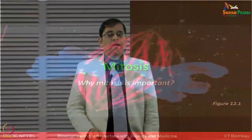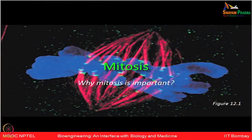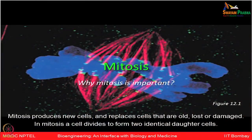Let us discuss why mitosis is so important. Think about all our growth requirements — old cells get replaced and replenished, damaged cells have to be repaired, and new cells have to be produced. All this happens because of mitosis, the process in which a cell divides to form two identical daughter cells.